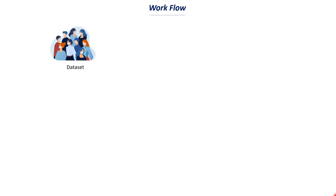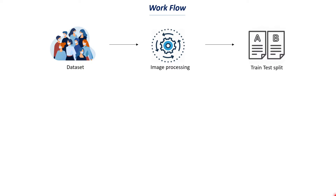Once we have the dataset, we need to do a lot of processing called image processing — resizing images, converting them into NumPy arrays, and related tasks. After processing, we split the images into training data and testing data. We use the training set to train the neural network and the test set to evaluate the model's performance.